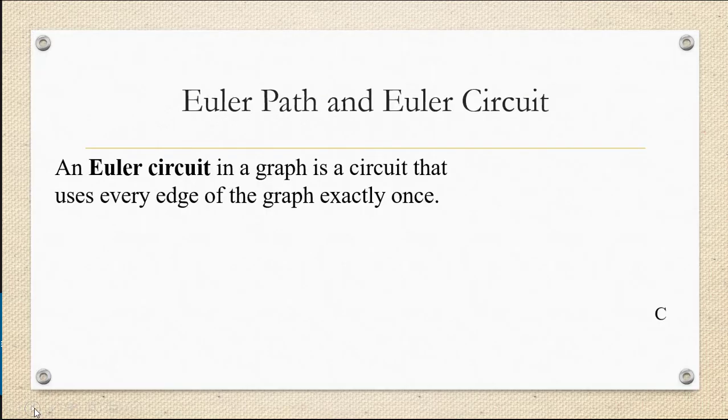An Euler circuit in a graph is a circuit that uses every edge of the graph exactly once. So here we have a graph, and an example of an Euler circuit would be if we started at A, and by the way, since it's a circuit, we're going to have to end at A too.